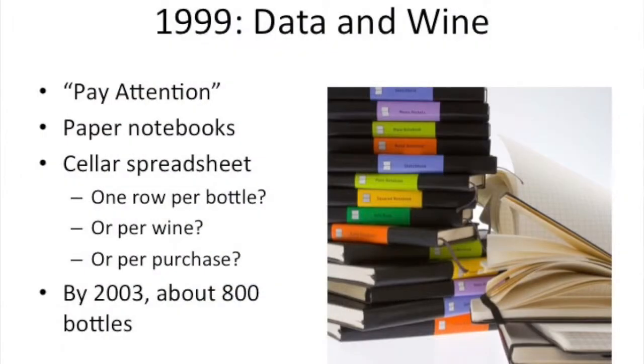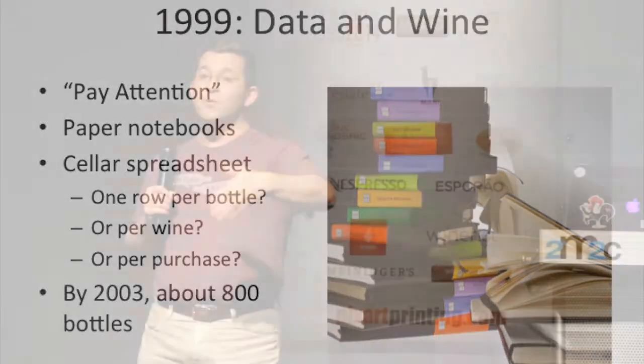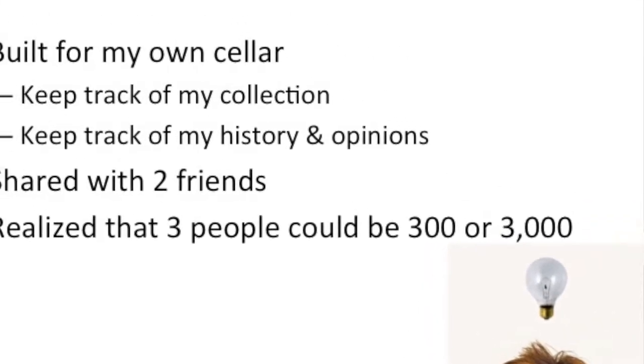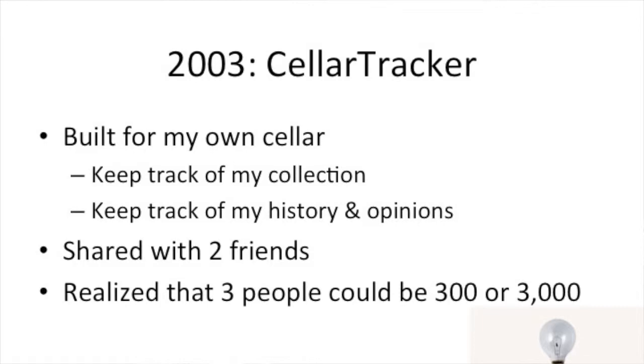The best advice I got was two words: 'pay attention.' Someone told me to write stuff down and keep track of it. So I was doing that in a spreadsheet — kind of unsatisfying. I was pretty nerdy about the kind of information I wanted to track. Fast forward a few years, in the middle of working on all the crash stuff, over the course of two weeks on a sabbatical I went and made CellarTracker for me. Just a really raw tool. Showed it to two friends and they said 'I want to use it.' Then I realized — three people could be 300 or 3,000. There was something there.